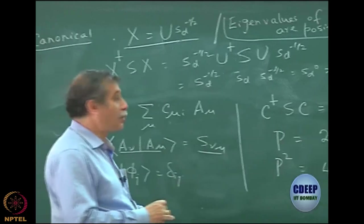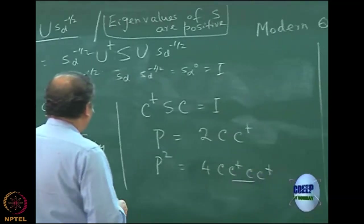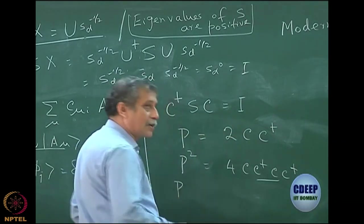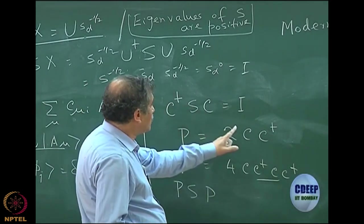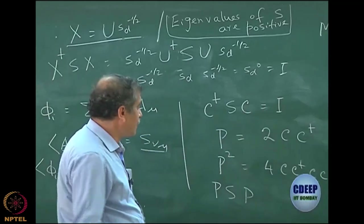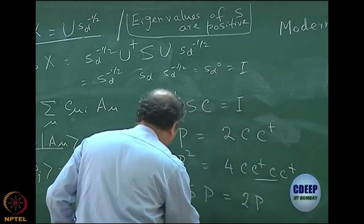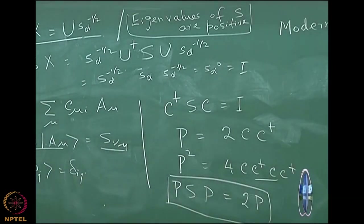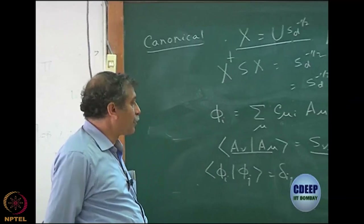What equation does P actually satisfy? There is an equation it satisfies — again you should be able to prove this from this expression. I give you that expression, try to prove it at home as a practice problem: PSP equals 2CC†SC, and C†SC is the identity, so PSP is equal to 2P. I will not do this, but I may ask it in the midterm exam. It is very easy — I hope all of you will be able to prove that PSP = 2P.